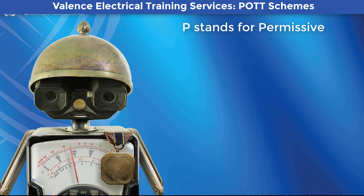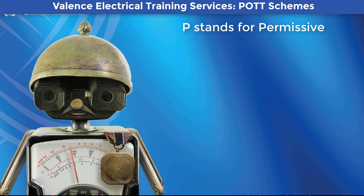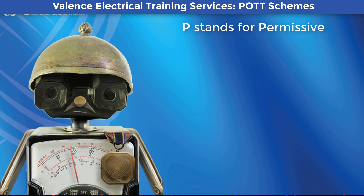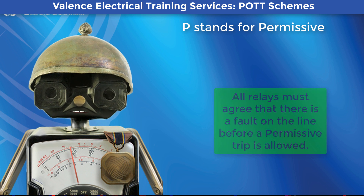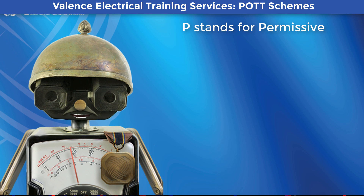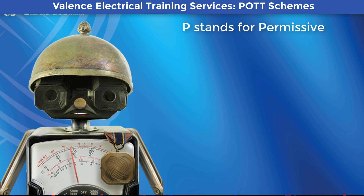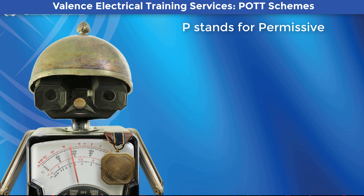The P stands for permissive. A permissive scheme tells the other relays protecting a line that they can trip faster if they also detect a fault in the correct direction. All relays must agree that there is a fault on the line before a permissive trip is allowed, unlike the direct scheme that would send a trip signal only if one relay detected a fault. Permissive schemes share information back and forth, so you will need your fancy GPS or iRig connected equipment on all sides of the line.